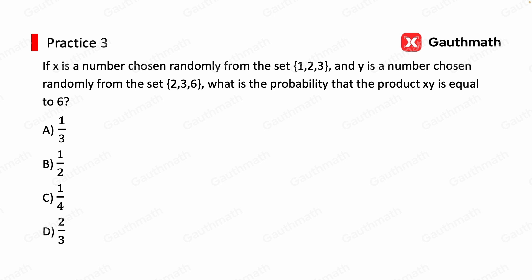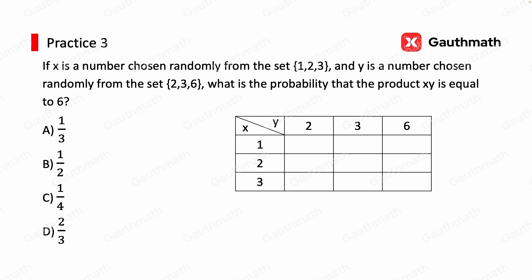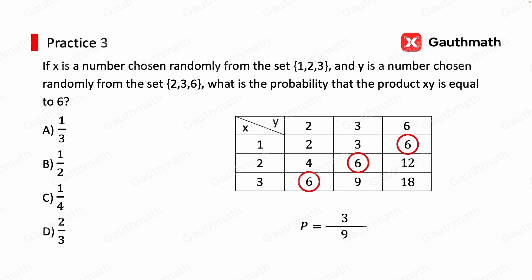Let's write out the values for x and y. We have 1, 2, 3 for x and 2, 3, 6 for y. Notice we have 9 elements in total, so the total possibilities is 9. We can multiply each value of x by each value of y — for example, the first box would be 1 times 2, the second box 2 times 2, and so on for all 9 boxes. After carrying out the calculations, notice we have three sixes. That means the numerator is 3, so the answer is 3 over 9 — because there are 9 possible outcomes and 3 of them have a product of 6. This simplifies to 1 over 3, and the answer is A.